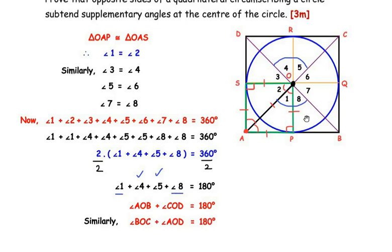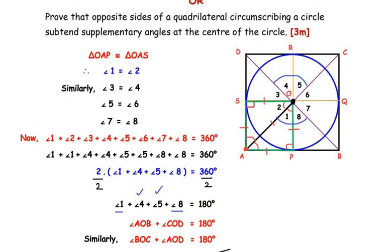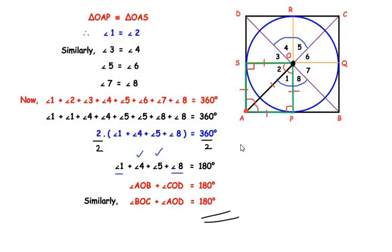So we have proved that the opposite sides of a quadrilateral circumscribing a circle make supplementary angles at the center of the circle. I hope you understood all the steps and liked the video. If you found this useful, check out the playlist for more examples, and if you are liking my videos, like, share and subscribe to my channel. Thank you for watching.